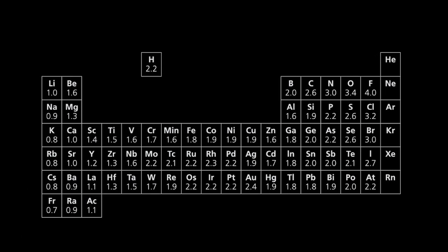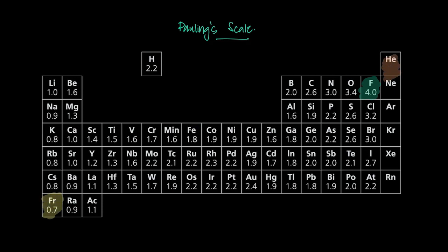It makes it easier to determine bond type if we know the values for electronegativity. There are values for it, but they're man-made scales — relative values designed by someone. We use one particular scale called Pauling's scale. It's not an actual measurable energy value; it's just somebody's values, and I'll give that to you now. There is a scale out of four. The noble gases are ignored since they don't bond, so electronegativity is a property for groups 1 to 17.